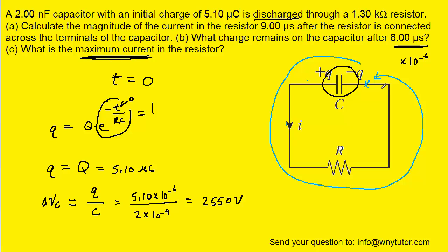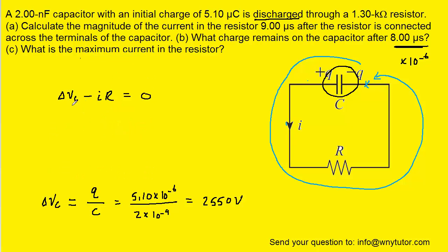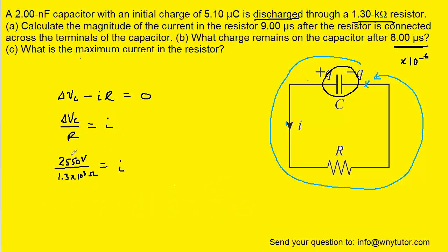Then we apply Kirchhoff's loop rule again, which we recall led to this equation. When we solve that for the current, we get the following expression. We just have to take this voltage and divide by the resistance stated in the question. That's going to give us the maximum current. When you do so, you should get approximately 1.96 amps. That's going to be the maximum current that's present in this discharging circuit.